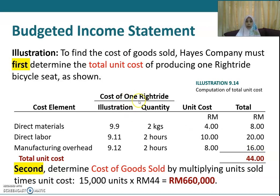So to produce one unit, you require eight ringgit for direct material, twenty ringgit for direct labor, and sixteen ringgit for manufacturing overhead. Totaling up all the cost elements, the total unit cost — or total cost per unit — to produce one unit of this product is 44 ringgit.